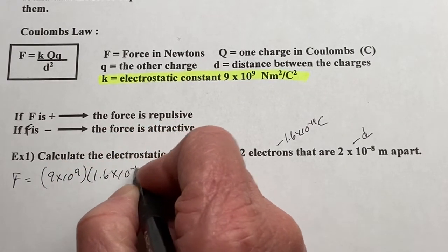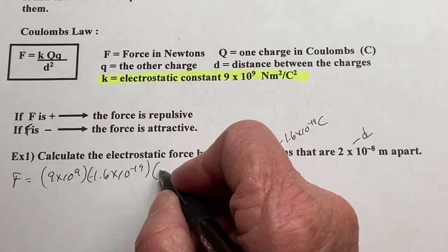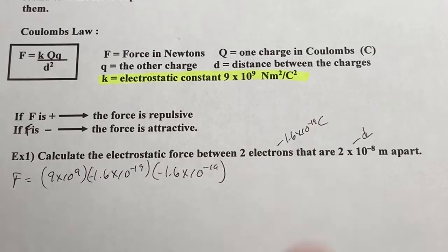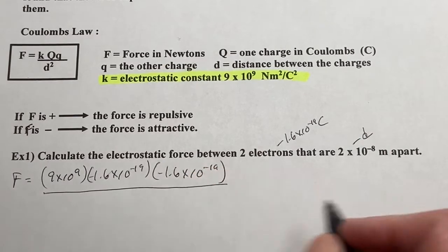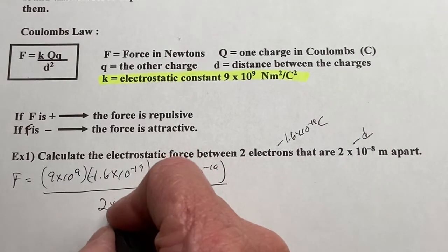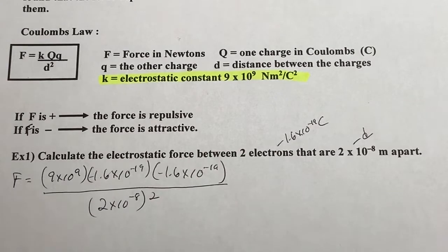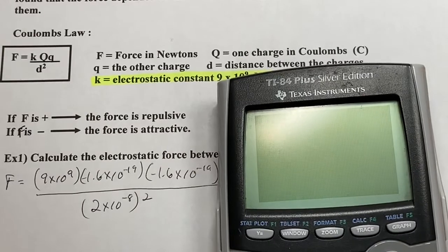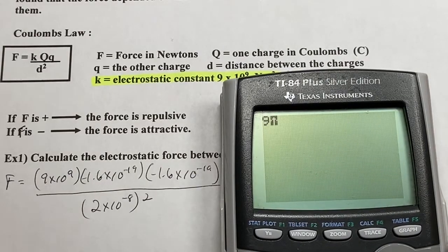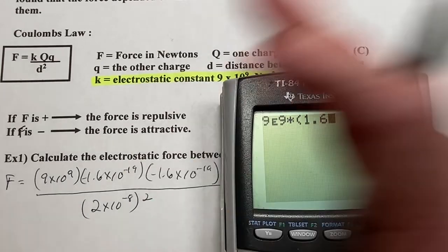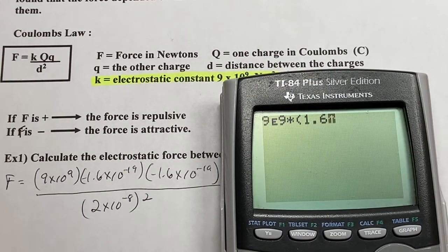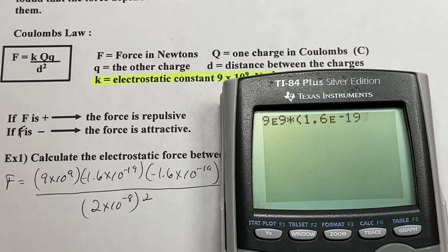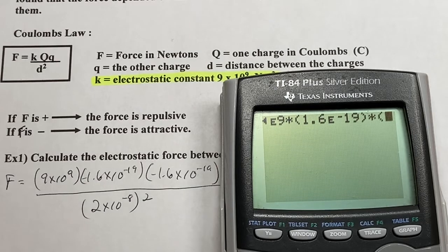1.6 times 10 to the negative 19th. Yes, negative. Negative 1.6 times 10 to the negative 19th. And again, these distances have to be in meters. So 2 times 10 to the negative 8th squared. Alright, these take a minute to type in. That's for sure. Alright, 9 second EE 9 times parentheses 1.6. I'm leaving off the negatives because I know negative times a negative is positive.